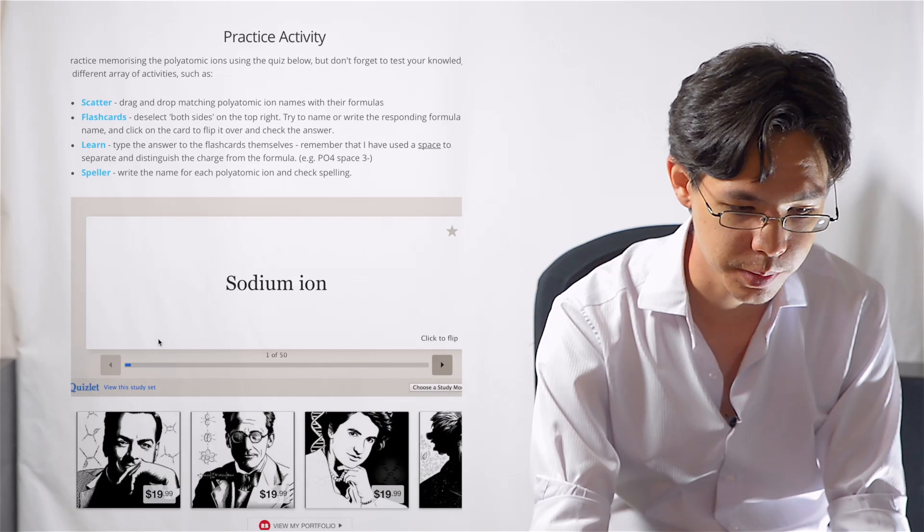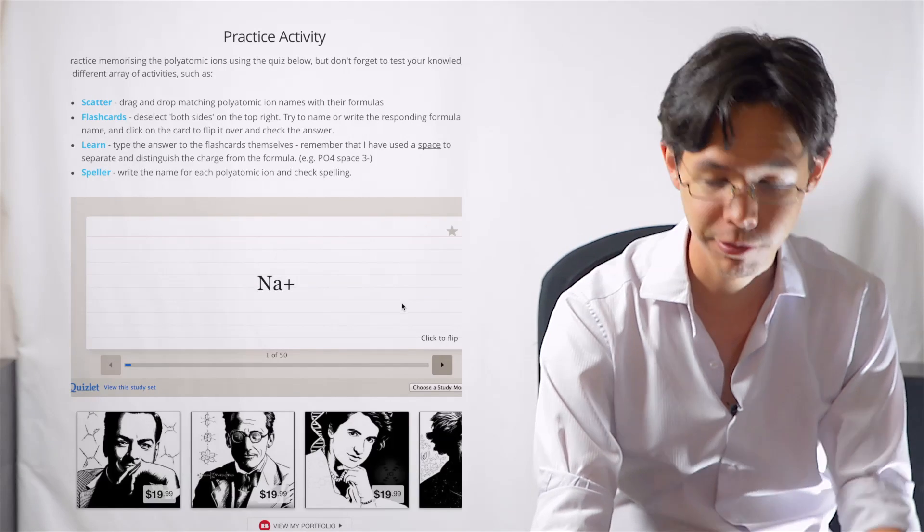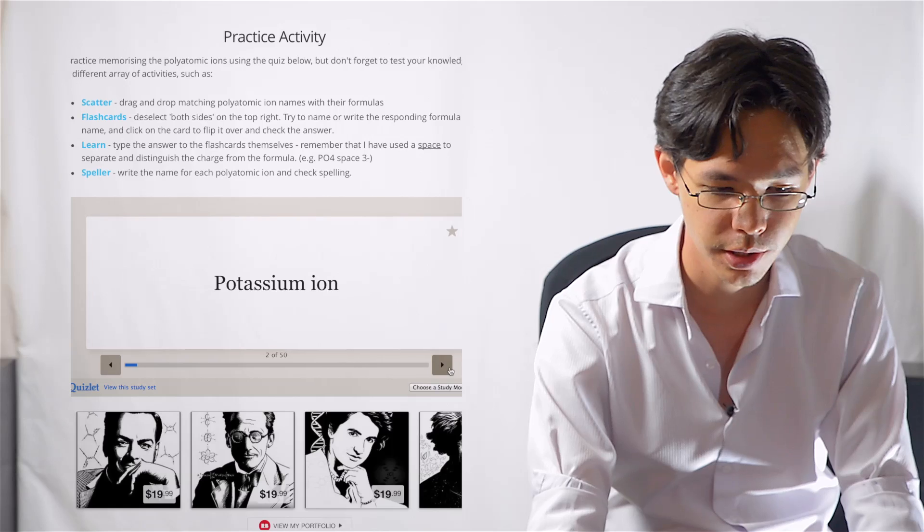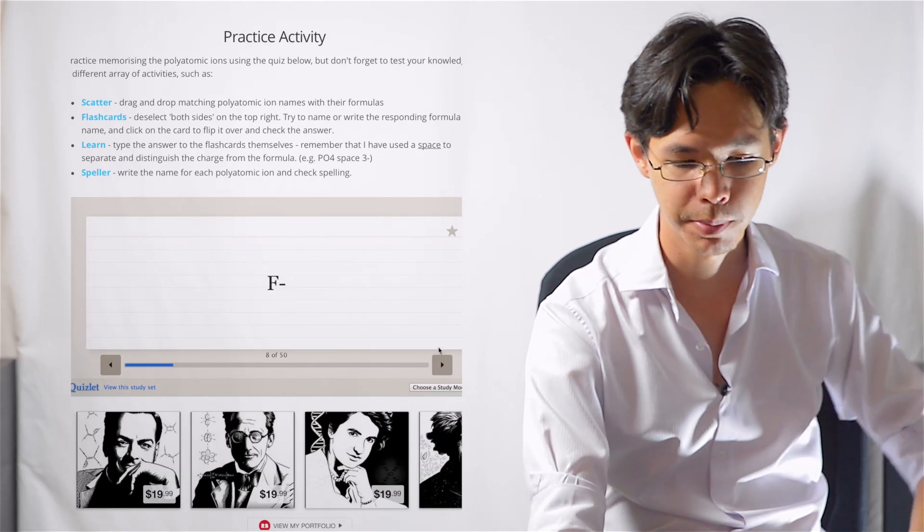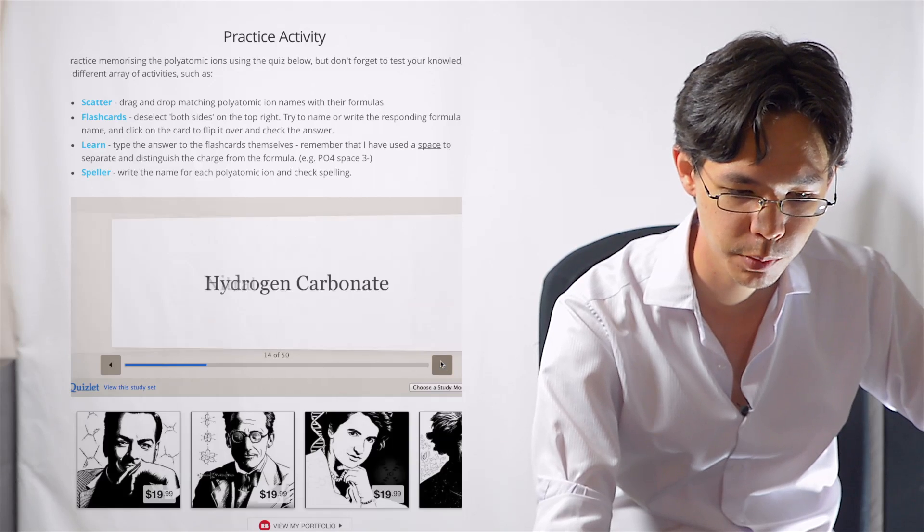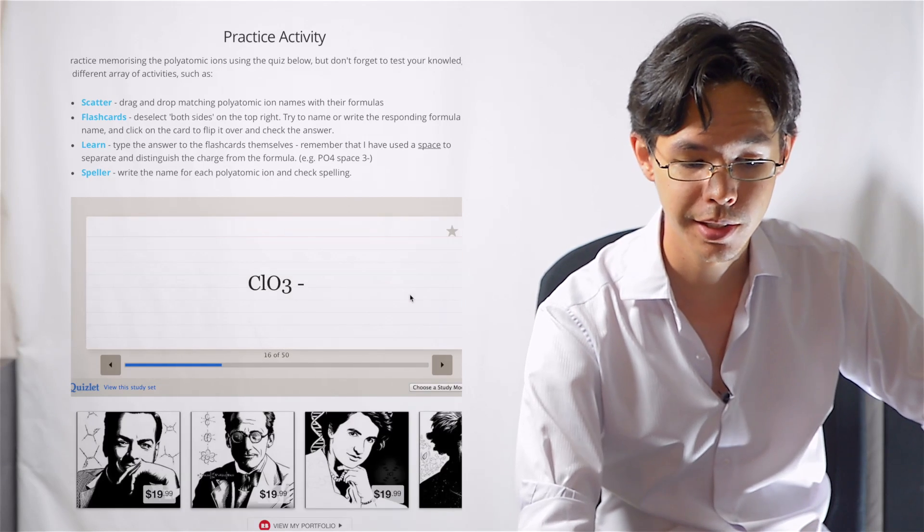So over here you can click on it and it flips over the card so you can see the ion charge. Fluoride, if you click on it, it flips over. There's also some polyatomics in there as well. So chlorate, which is a polyatomic, you click it, it flips it over.